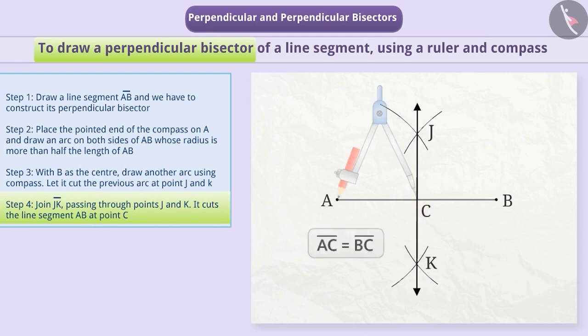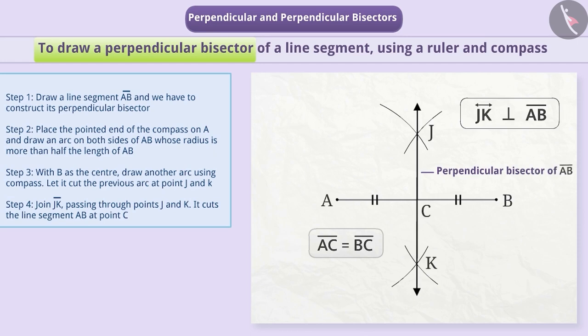Here, AC and BC are equal. Line JK divides line segment AB into two equal parts. Also, this line is perpendicular to AB. Therefore, we can say that line JK is the perpendicular bisector of line segment AB. Remember that you will open the compass for more than half the distance. If you open the compass for less than half the distance, the arcs will not intersect.